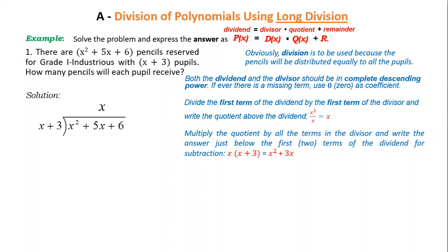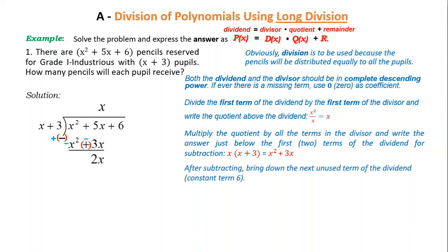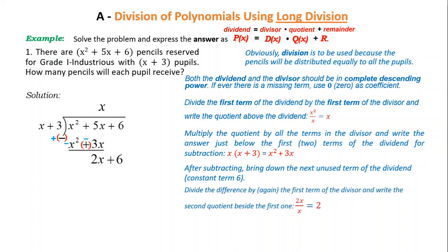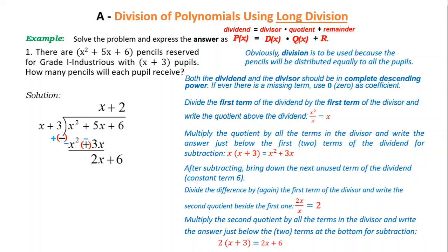Divide again: 2x ÷ x = 2. Multiply 2 by all terms in the divisor: 2x + 6. Subtract — change the sign and proceed to addition. First term becomes 0, second term becomes 0 as well. So the quotient is x + 2, which is the number of pencils each pupil will receive, and the remainder is 0. Writing the answer based on the instruction: P(x) = (x + 3)(x + 2) + 0, or simply P(x) = (x + 3)(x + 2).